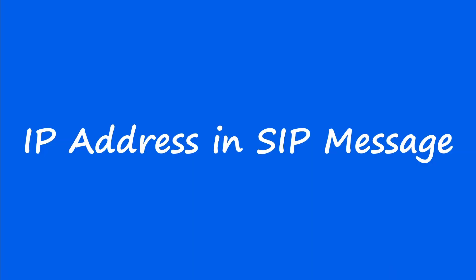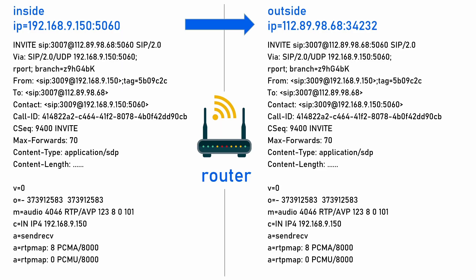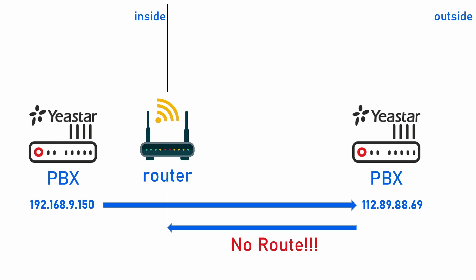SIP is an application layer protocol, which means what is listed in the headers and SDP might not match the actual IP packet. In the first scenario, a PBX makes a call to an extension registered from an outside network. When the SIP INVITE message is sent to the outside network, the source IP address changes but the IP addresses in the headers and SDP remain the same. This is like the PBX telling the other side to send audio to a private network IP address — but there is no route for a device on the outside network to send voice to a private IP address. The solution for this one-way audio problem is to configure NAT on the PBX so that the INVITE uses the public IP address in the SDP.